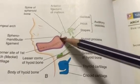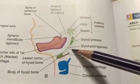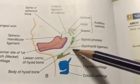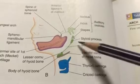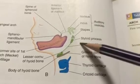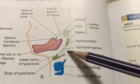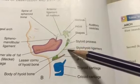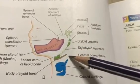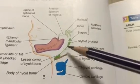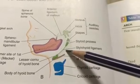The nerve of the second arch is the facial nerve. The blood vessel of the first arch is the maxillary artery, and for the second arch it is the stapedial artery. The muscles of facial expression are developed from the second arch since the nerve is the facial nerve. Along with that you have the posterior belly of digastric, stylohyoid, and stapedius.